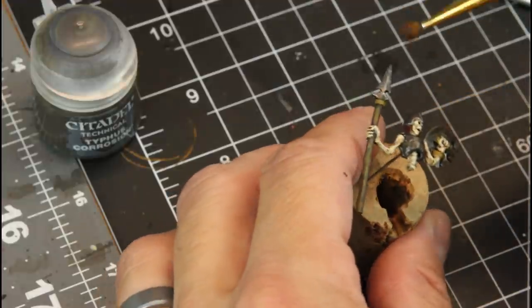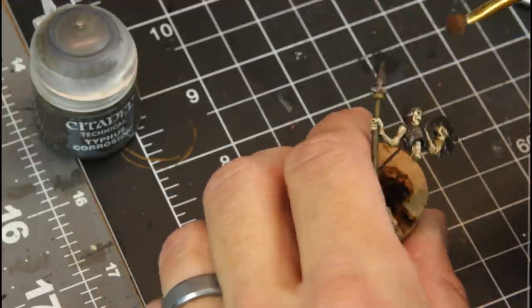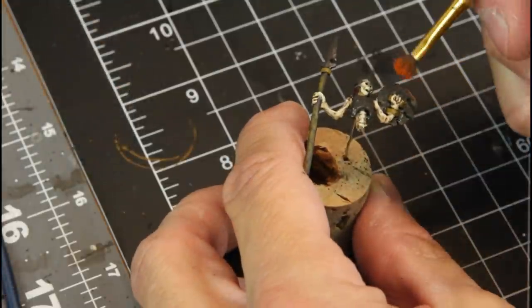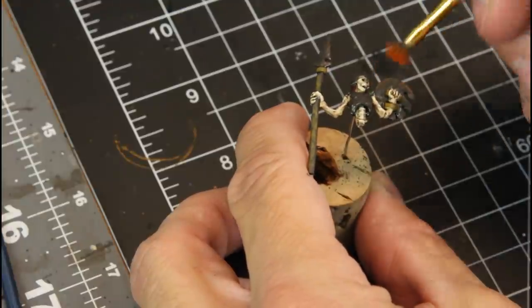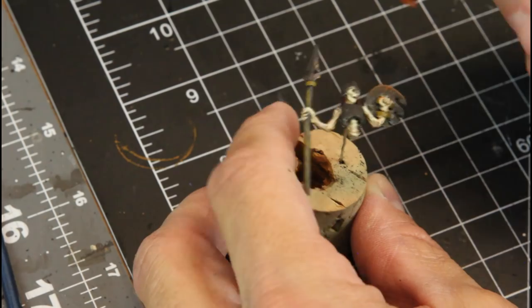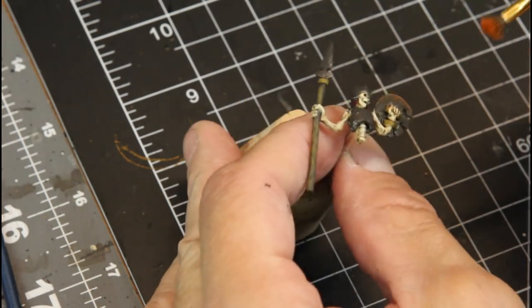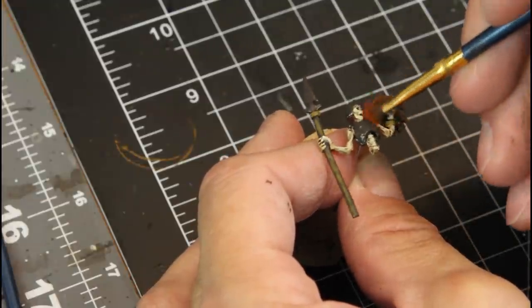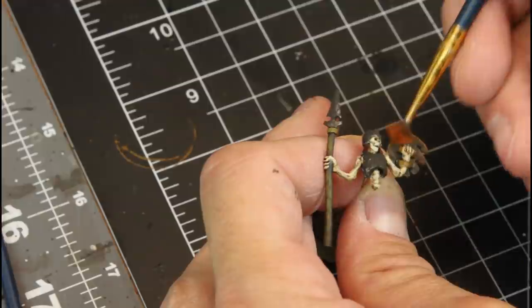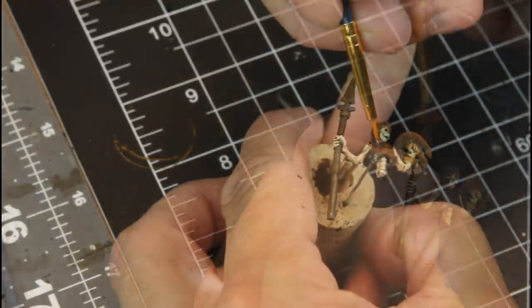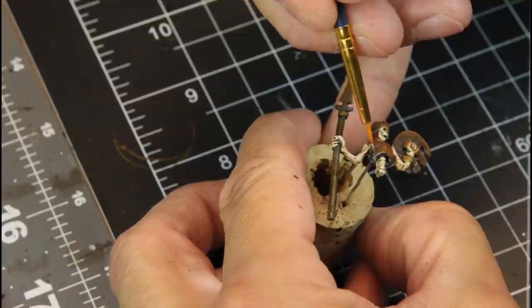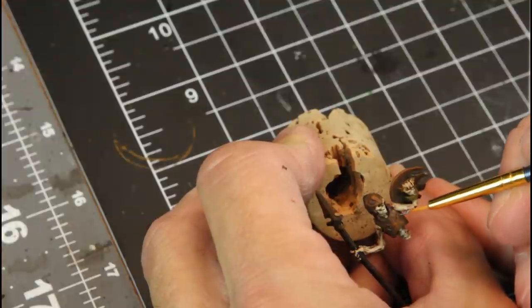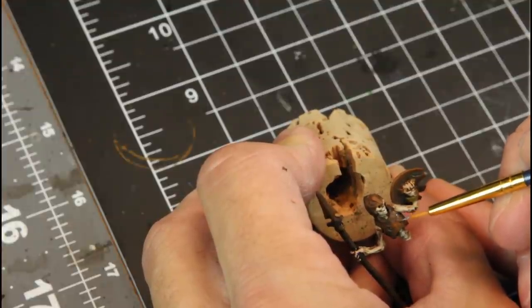All right, now this is a lot of fun. I'm really enjoying this rust effect method. We'll take a little bit of Typhus Corrosion. And we're going to paint that right on top of the Leadbelcher paint, all of the metal. And this actually has a little bit of grit inside of it. So it adds some texture to that as well. So it really looks like it's corroded. And once we have done that, we're going to take a little Riso Rust. It's also by Games Workshop. And we're going to get most of that off the brush. And then just dry brush pretty heavy all of the metal. And it's going to give it a really cool rust effect.